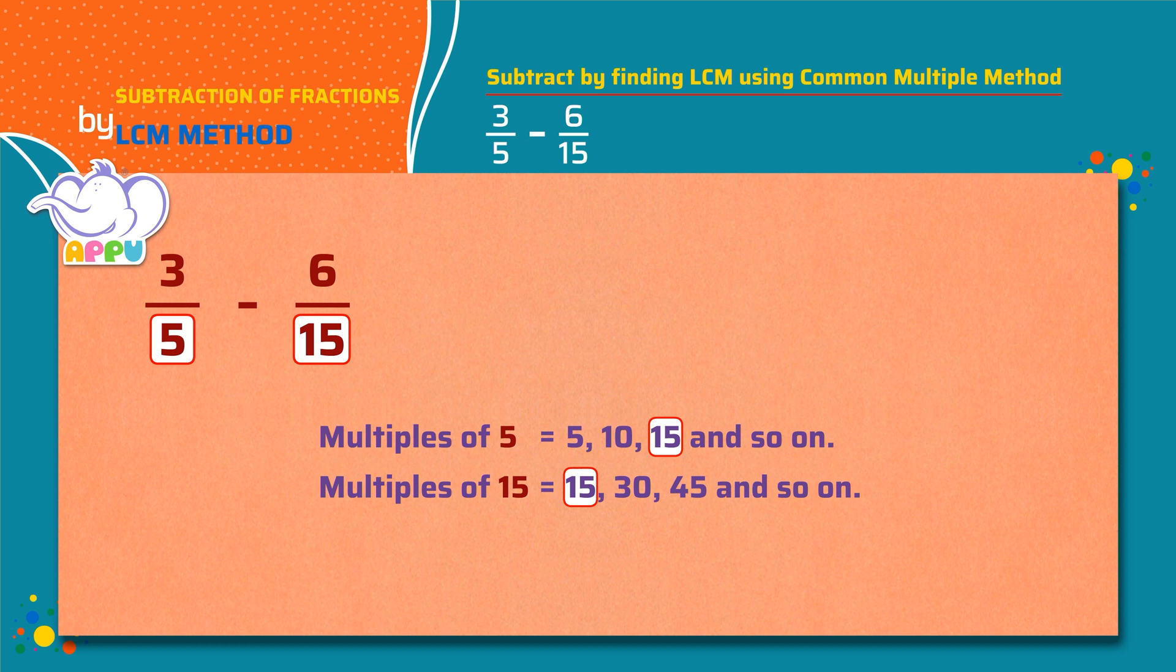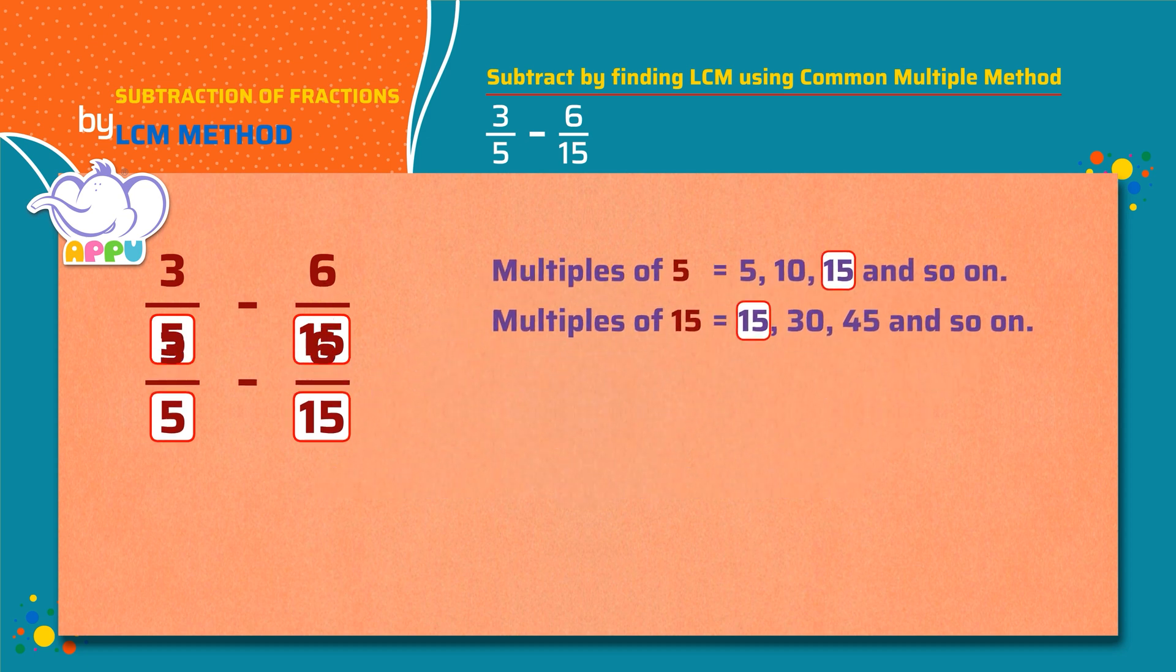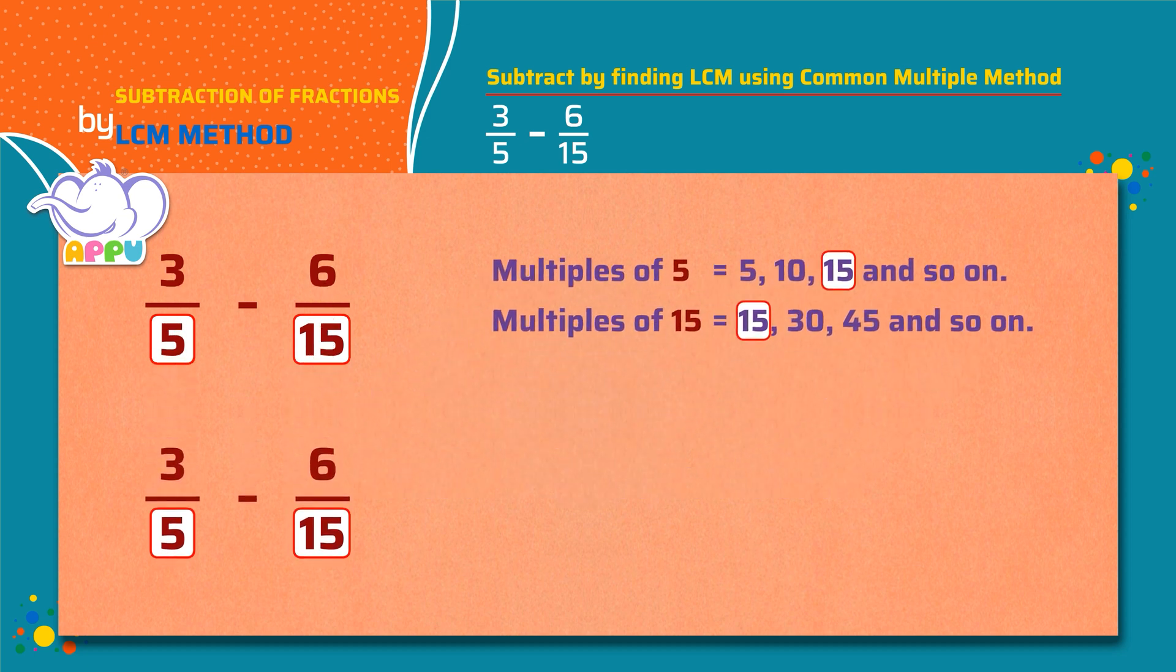So let's make the denominators the same as 15. We multiply the denominator of the first fraction with 3. That is 5 times 3 equals 15. Since we multiply the denominator, we multiply the numerator with the same number. That is 3 times 3. We get 9 by 15.